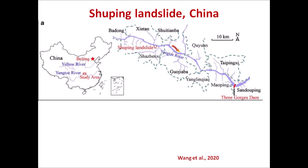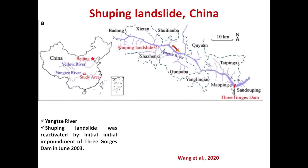Let me explain a case study. This is a landslide region near the Yangtze River in China, in the Three Gorges Dam area. The dam construction took place in the early 2000s. There is a Three Gorges Dam, and in the nearby Zigui County, Hubei Province, there is the Shuping landslide. In 2003, during dam impoundment, this landslide became very active.